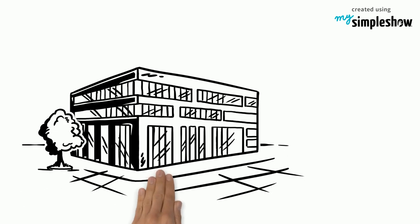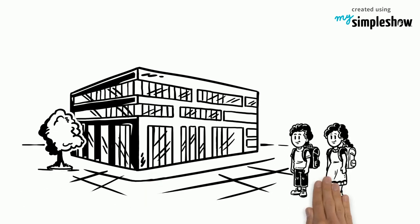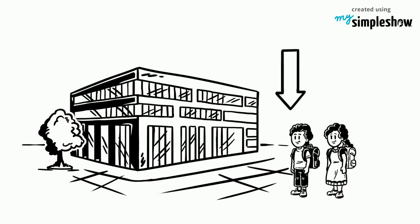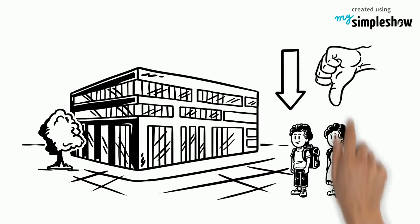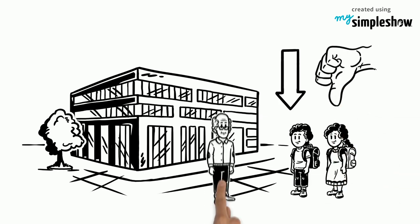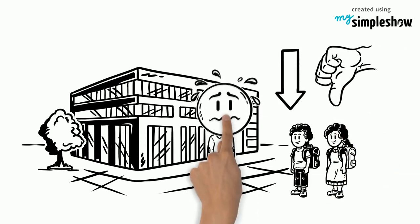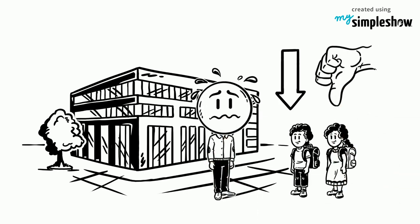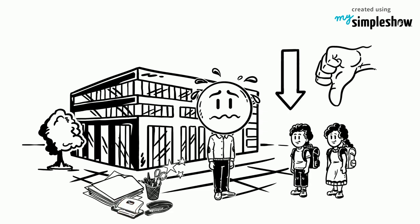This is General High School, and it is a grade D school. Many students either drop out or have failing grades. The teachers are stressed, overworked, and often buy their own supplies.